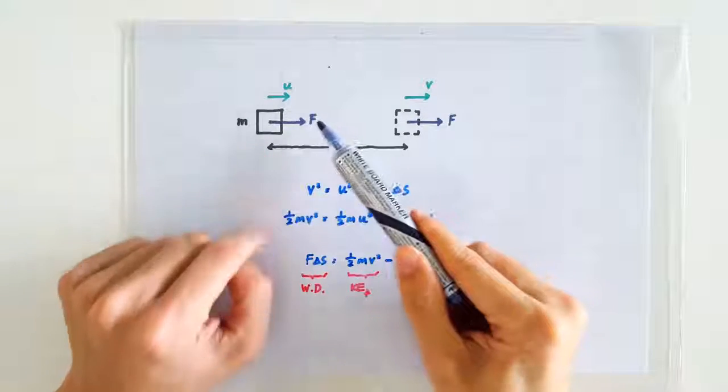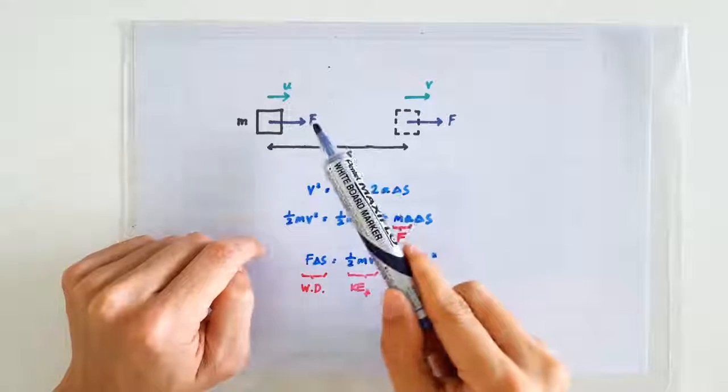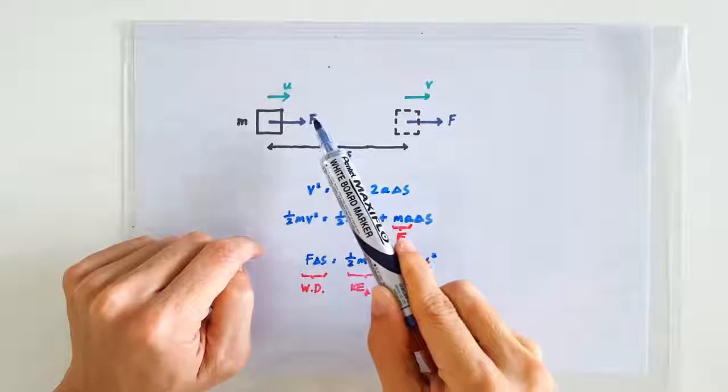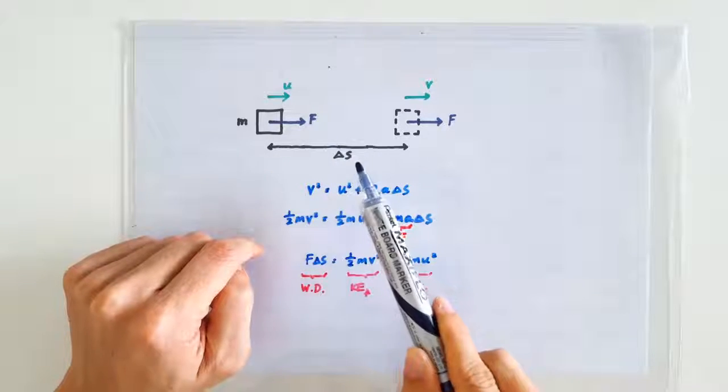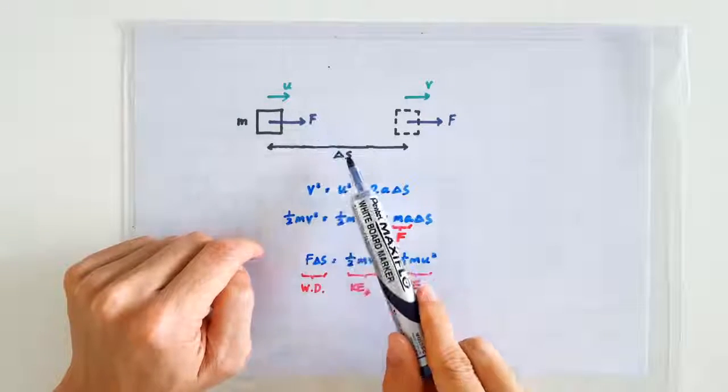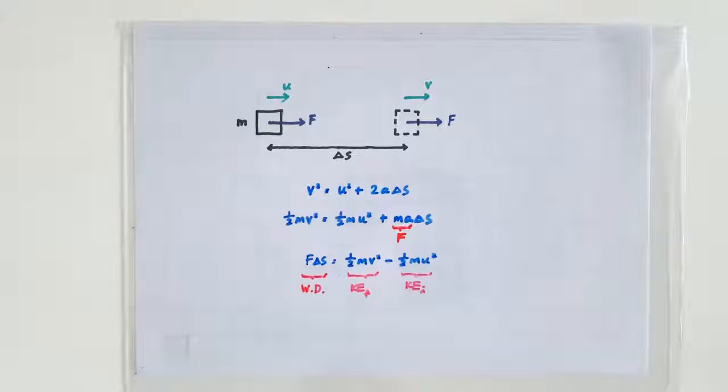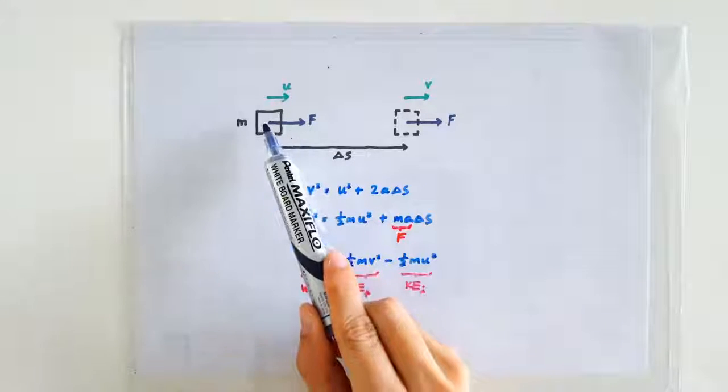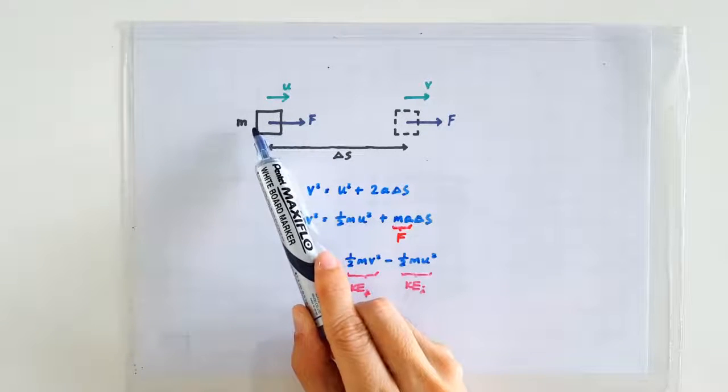When a force F acts on the mass, the amount of energy injected by the force F can be calculated by F times delta s. This is called doing work on the mass. In this case, the work done has gone into increasing the kinetic energy of the mass.